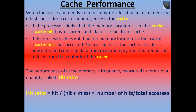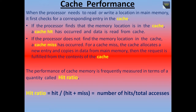Now we talk about cache performance. When the processor needs to read or write a location in main memory, it first checks for a corresponding entry in the cache. If the processor finds that the memory location is in the cache, a cache hit has occurred and data is read from cache. If not found, a cache miss has occurred — the cache allocates a new entry and copies data from main memory, then fulfills the request from the cache. Cache performance is measured by the hit ratio, which equals hits divided by the sum of hits plus misses, or equivalently, number of hits divided by number of accesses.